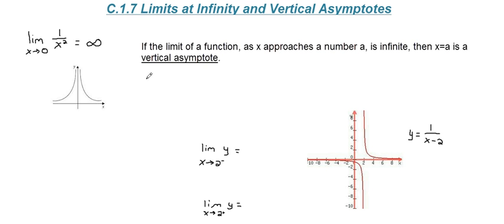And it leads us to what we think of as vertical asymptotes. In this problem we do have a vertical asymptote at x equals 0. If the limit of a function as x approaches some number a is infinite, then x equals a is in fact a vertical asymptote.